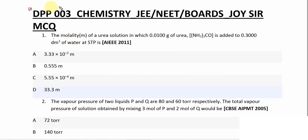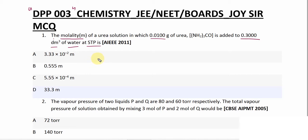Okay students, we will do the questions of TPP003. The first question is all about molality — the molality of a urea solution in which 0.01 gram of urea is added to 0.300 decimeter cube of water at STP. The weight given for urea is 0.01 gram.